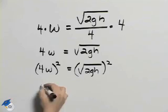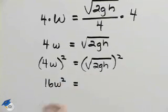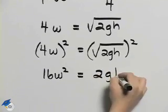Now 4w squared is 16w squared. The square root of 2gh squared is 2gh.